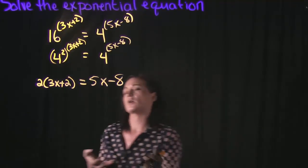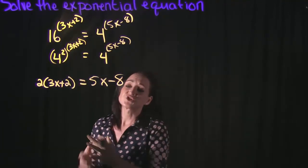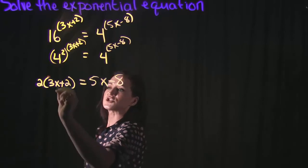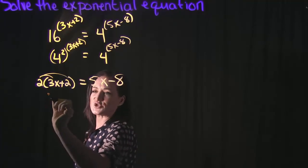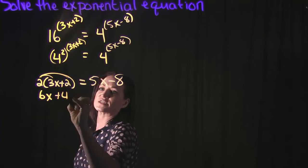This is the equation that we need to solve. Distributing the 2 on the left-hand side: 2 times 3x gives us 6x, 2 times 2 gives us 4, so we have 6x plus 4 equals 5x minus 8.